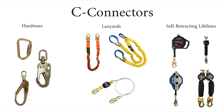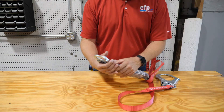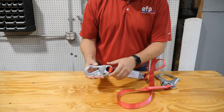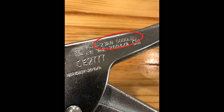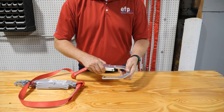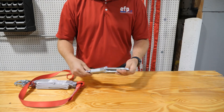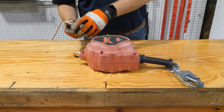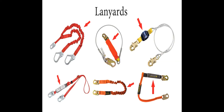The C is for connectors. These include hardware, lanyards, and self-retracting lifelines. First, hardware: a snap hook is what you'll attach to your D-ring or your anchor. The snap hook must have two functioning locking mechanisms. You can only use hardware specifically designed for fall protection that is labeled to withstand forces of 5,000 pounds. A rebar snap hook functions the same way but has a larger gate opening for a wide range of applications. The carabiner must also have dual functioning locking mechanisms. A lanyard connects you from your back D-ring to your anchor point, and all lanyards used in fall arrest must have a shock absorber.